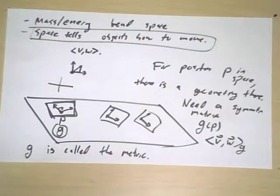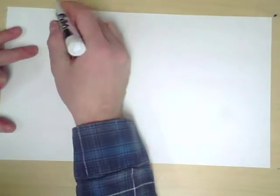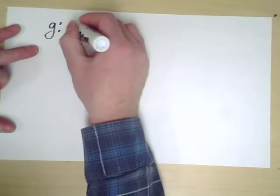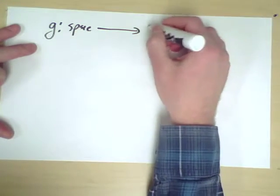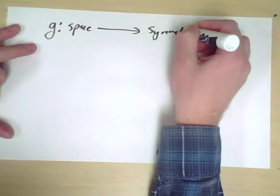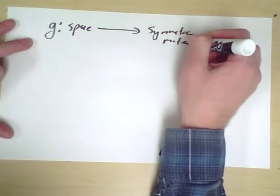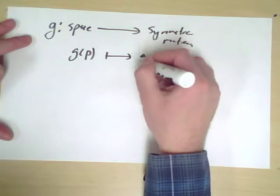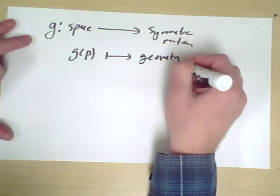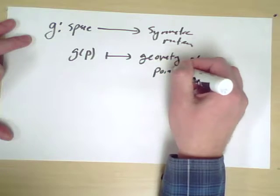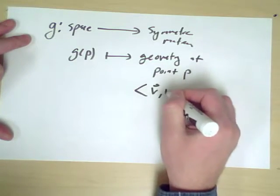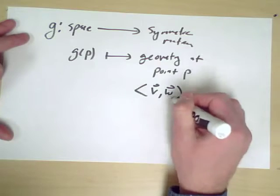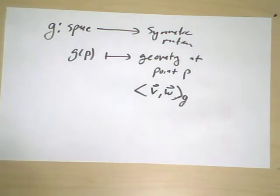So again, the idea is we have, in fact, a function from space. So G is a function from space to the space of symmetric matrices. And G of P gives you the geometry at point P using the inner product defined by that particular metric G.